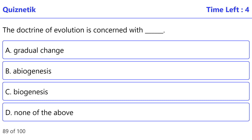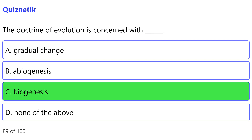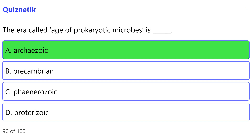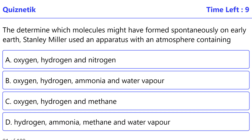The doctrine of evolution is concerned with — correct option is C — biogenesis. The era called the age of prokaryotic microbes is — correct option — the Archaeozoic age.